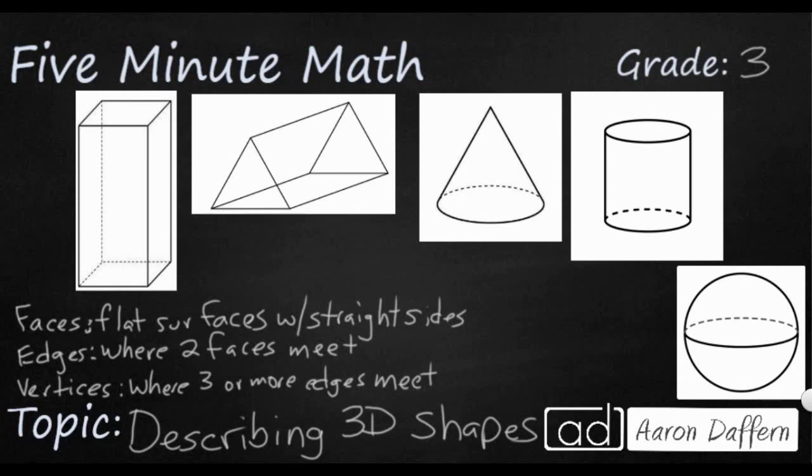So you see on the screen here we have five different shapes, and we're going to describe them using geometric language. And I've written our three terms that we're going to use down here: faces, edges, and vertices. So let me explain what these things are.